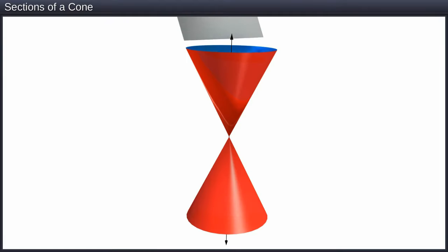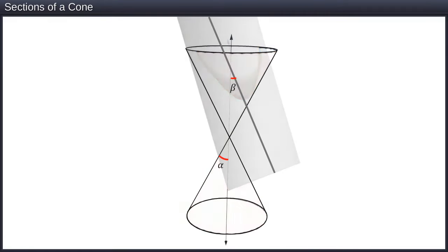If the plane intersects one nappe of the cone such that angle beta is equal to angle alpha, the resulting conic section is a parabola.